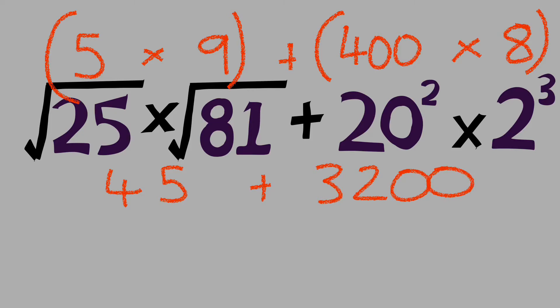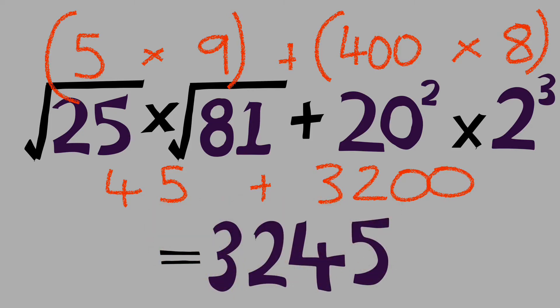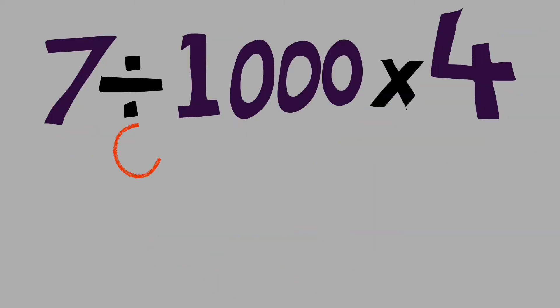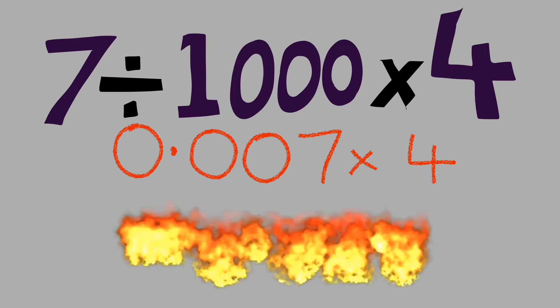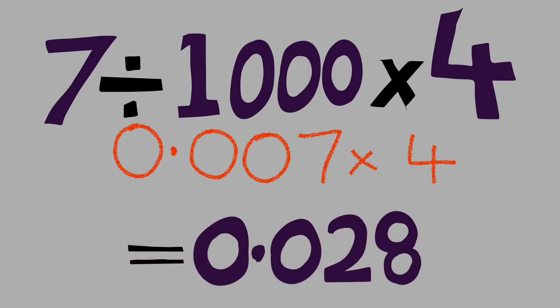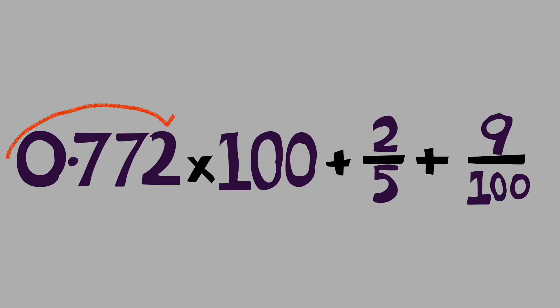So to get our answer, we go 45 plus 3200. 7 divided by 1000, well that's going to be 0.007. Now we need to multiply that by 4, so we're going to be left with 0.028.